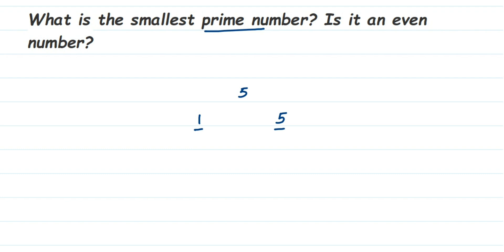Now in this question, what is the smallest prime number and is it an even number? Let's check with 1. 1 is neither a prime number nor a composite number. We don't consider 1. Then the next number is 2.